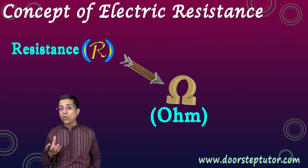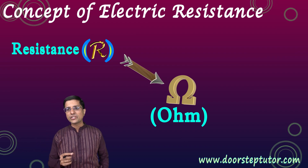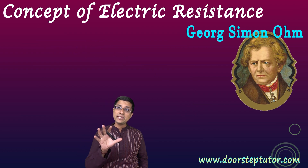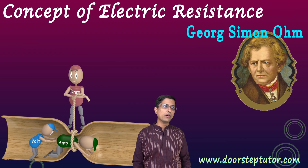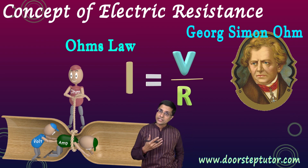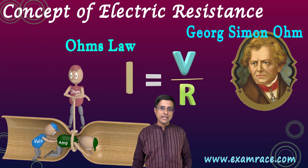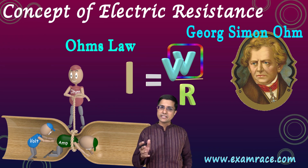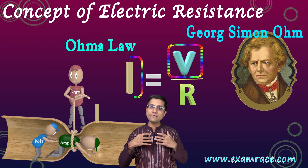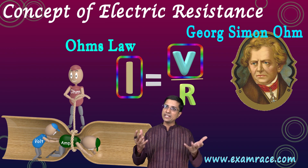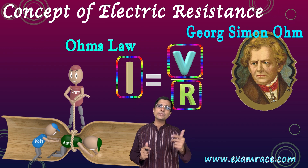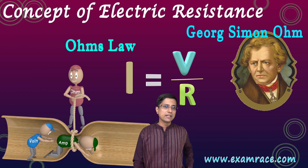Electrical resistance is measured in units called Ohms, named after German physicist Georg Simon Ohm, who was a teacher and who invented what we call Ohm's Law. Look at the picture here — the voltage or potential difference across the circuit is trying to drive the current, while the resistance inside the circuit is trying to stop it.